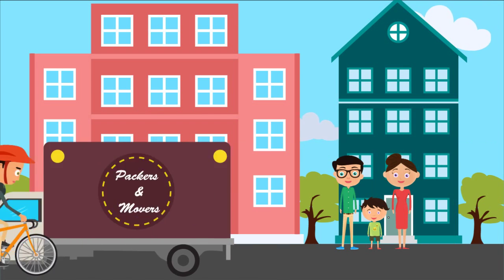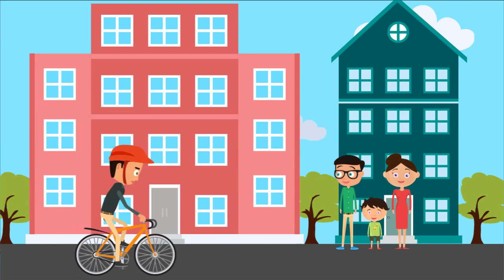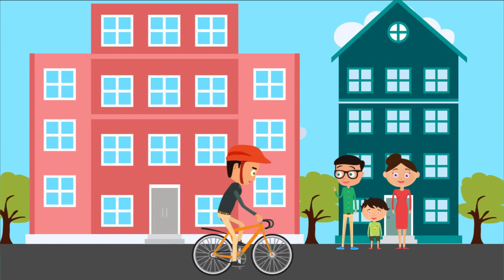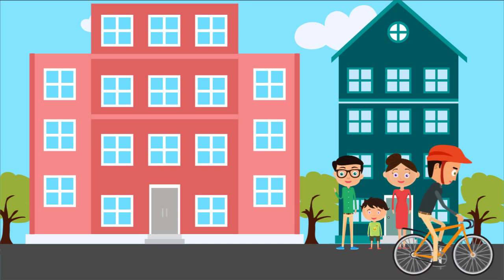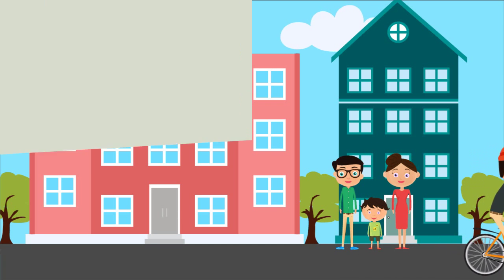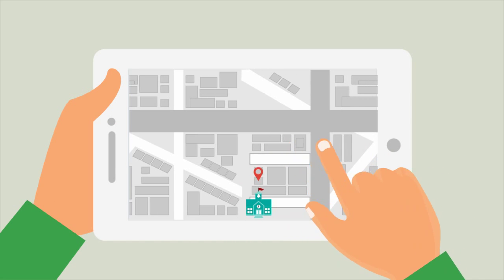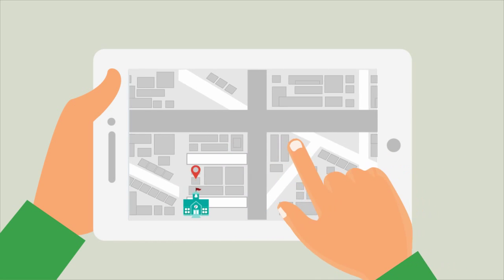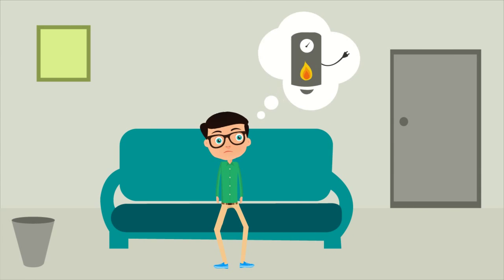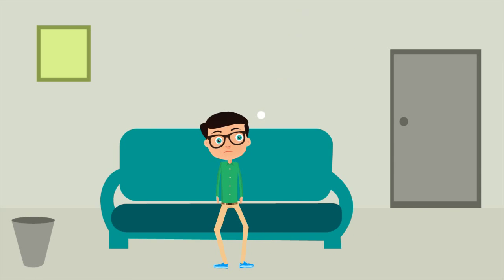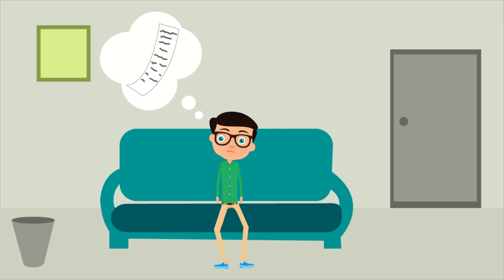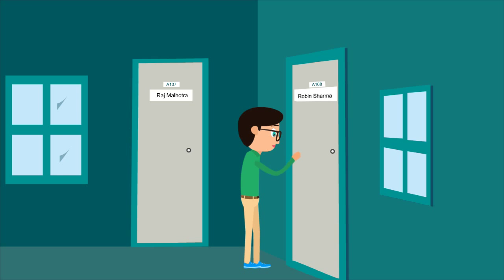Raj has moved into his new apartment with his family but is struggling to connect with his neighbours and find help in settling down. He is searching for a good school for his kids around the locality, an electrician to fix the geyser, and also wants to find an easier way to pay his maintenance due. He tried knocking at his neighbours' doors but they are out of the house most of the time.